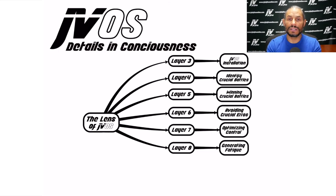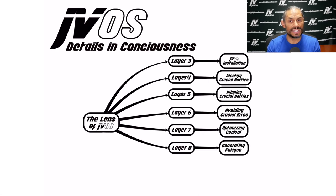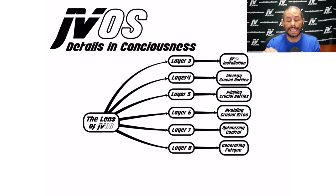Layer eight is generating fatigue. A lot of people don't think of Jiu-Jitsu as making your opponent tired, but there are patterns and a way to distribute your weight that will generate fatigue on the opponent. When the opponent is tired, it's a good way to force them into acceptance — basically giving up. If they're not yet tired, it is a way to get them to become tired so they start making mistakes. It is much more common to make a mistake when tired than when fresh.